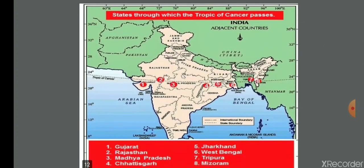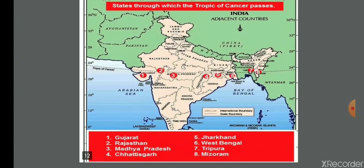The states through which the Tropic of Cancer passes are: Rajasthan, Madhya Pradesh, Chhattisgarh, Jharkhand, West Bengal, Tripura, and Mizoram.